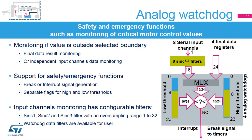The analog watchdog monitors sampled analog data to check if it remains within selected high and low threshold values. The input to the analog watchdog can come from the final converted data result or directly from input serial channels through a configurable filter. If data exceeds the allowed boundaries, an interrupt can be invoked or a brake signal generated. An interrupt allows software to decide the next action, while a brake signal can perform a safety function directly by hardware — for example, stopping a timer that controls a motor. There are separate high and low threshold levels and separate flags for each threshold.